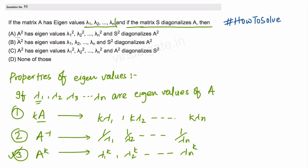Option A says A² has eigenvalues λ₁², λ₂², λₙ². From our third property, this portion is right. But using the second part about diagonalization, we have to determine which one out of A or C is correct.